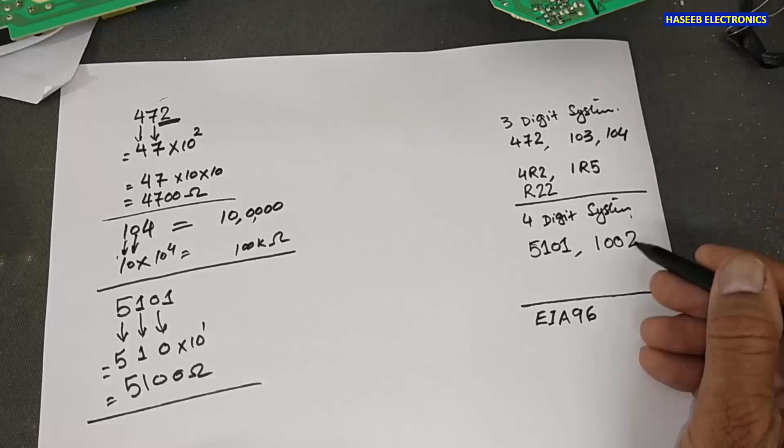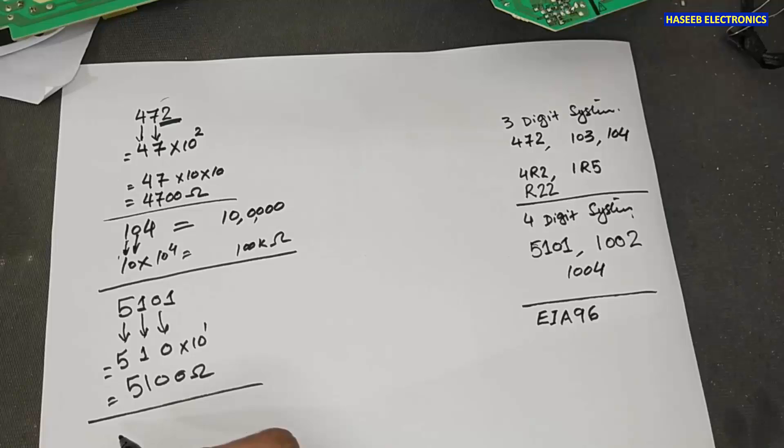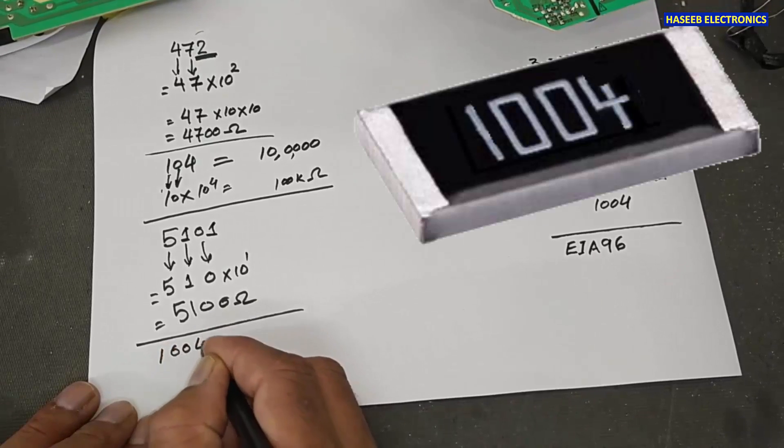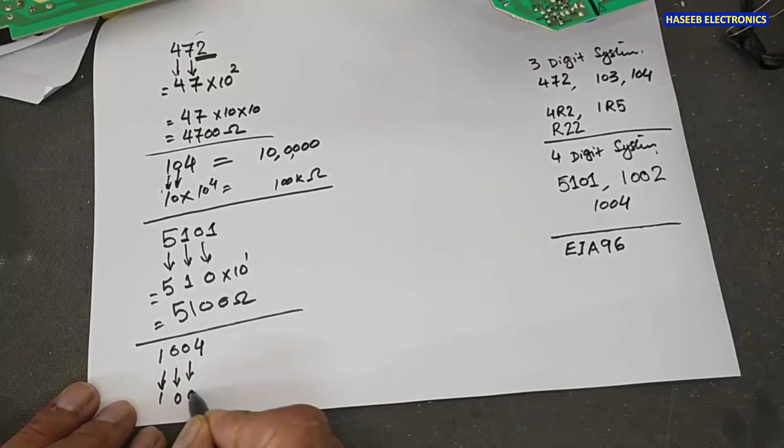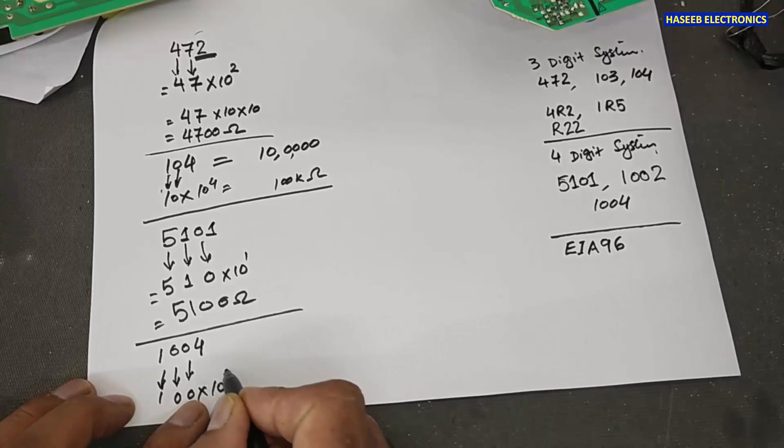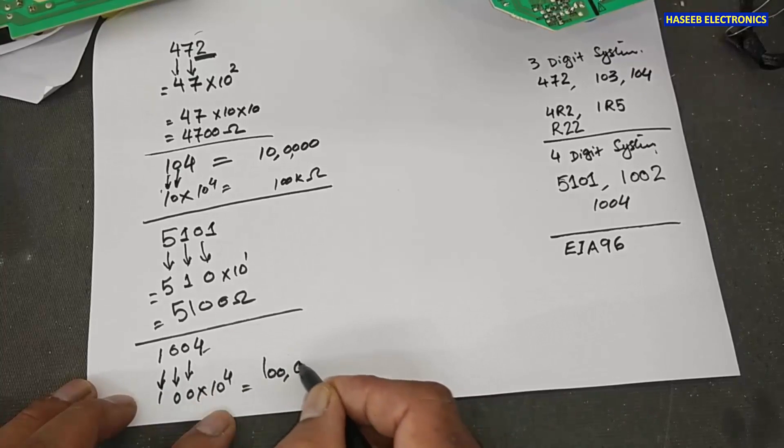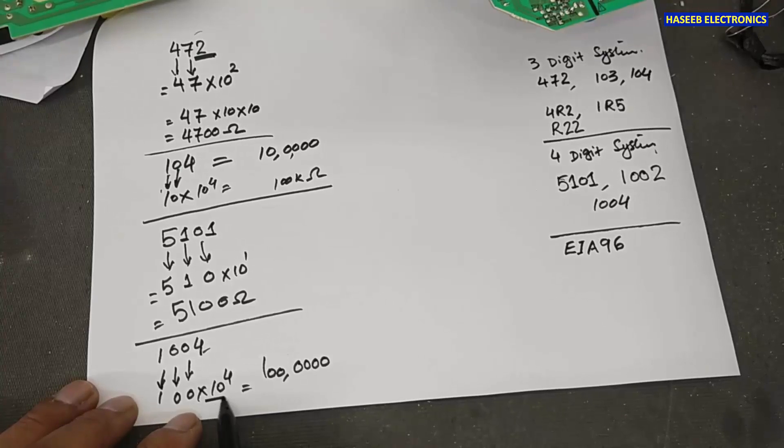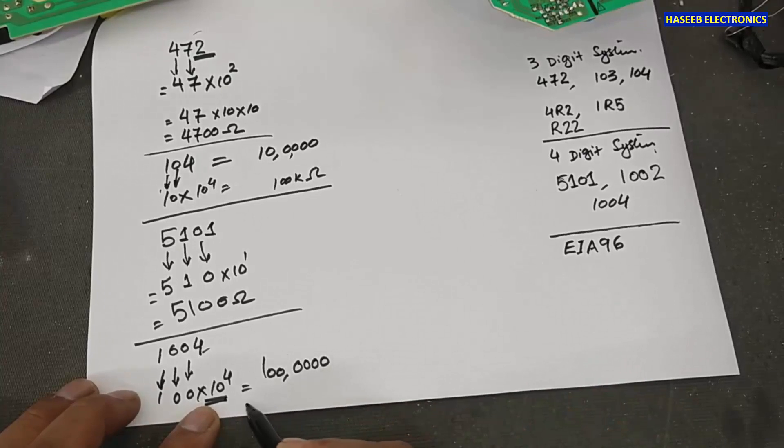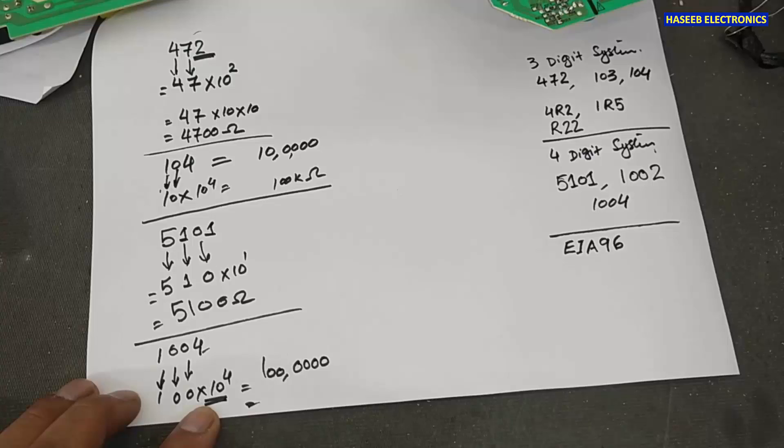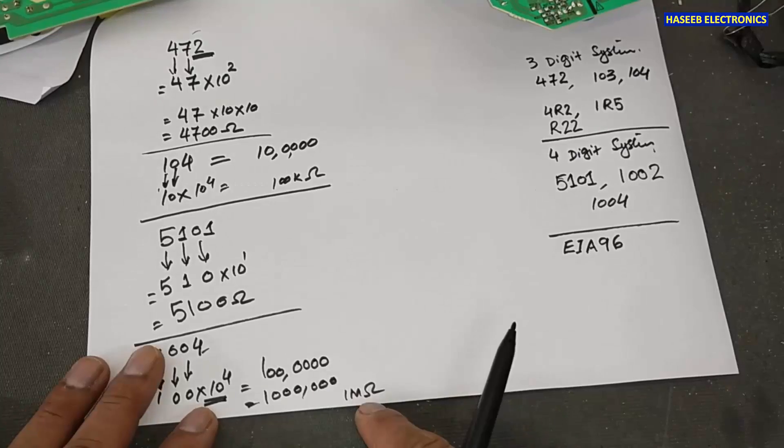If it is 1, 0, 0, 3, 1, 0, 0, 4. For example, we have a code 1, 0, 0, 4. In this condition 1, 0, 0, 4, 1, 0, 0 and 4 zeros. 10 raised to power 4. 100. The same 4 zeros. If we multiply, if we solve this equation, 100, it will become 10 raised to power 4, 4 zeros. So, it will become 1 megaohm resistor. 1,000 kilo. That is 1 megaohm.